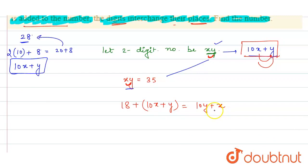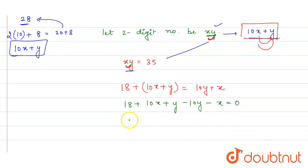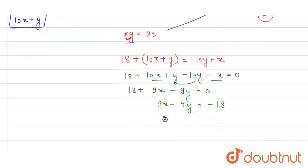Now, what will we find? What is 18 plus 10x plus y? That is minus 10y minus x. This is equal to 0. Here, what will happen? 18, 10x minus x, that is 9x, y minus 10y, that is minus 9y. This is equal to 0. 9x minus 9y is equal to minus 18. We will divide the whole equation by 9. x minus y is equal to minus 2.